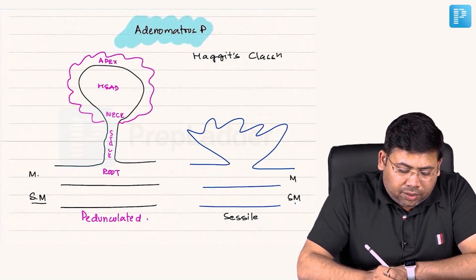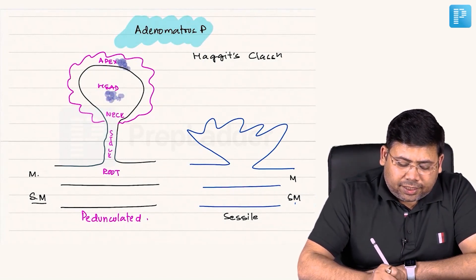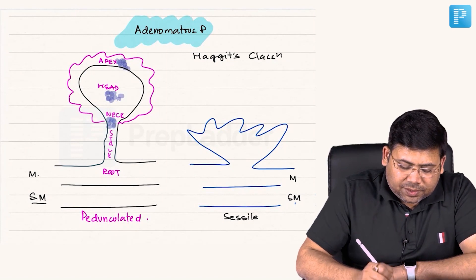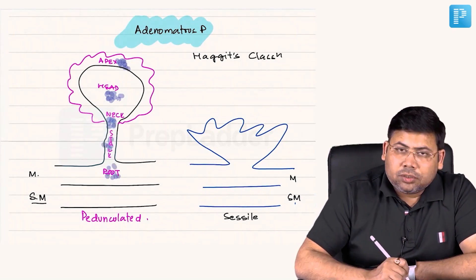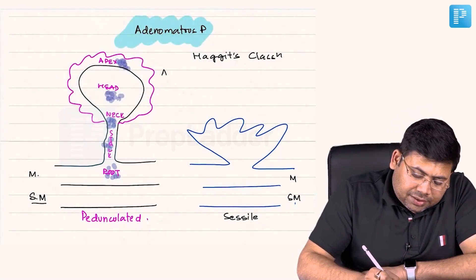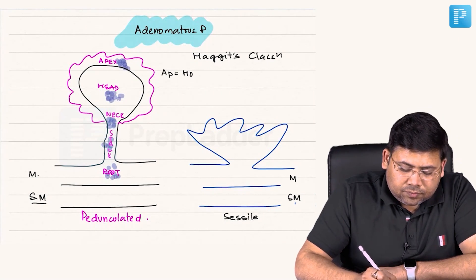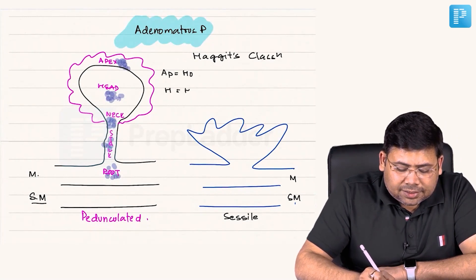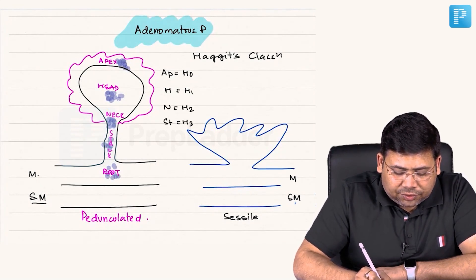If the tumor is present in the apex, head, neck, stalk, or root, each corresponds to a Haggitt category. Apex is H0, head is H1, neck is H2, stalk is H3, and root is H4.